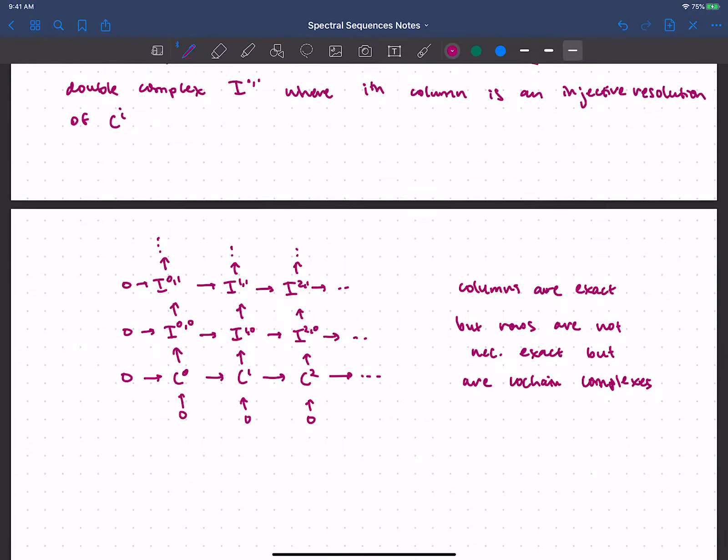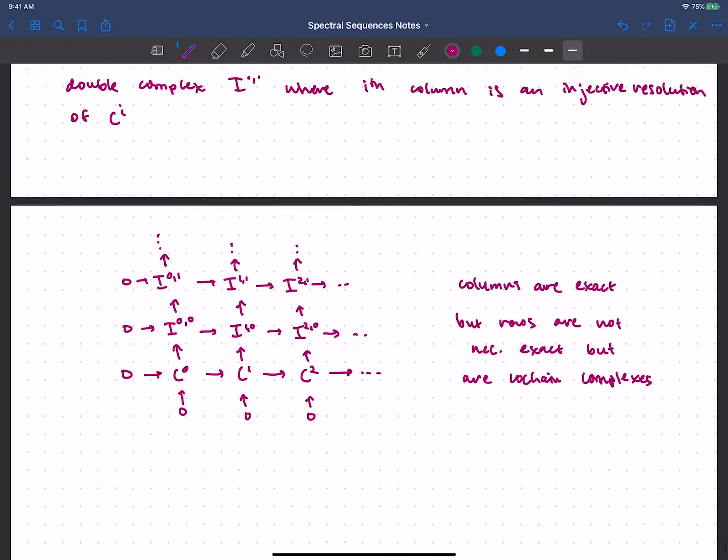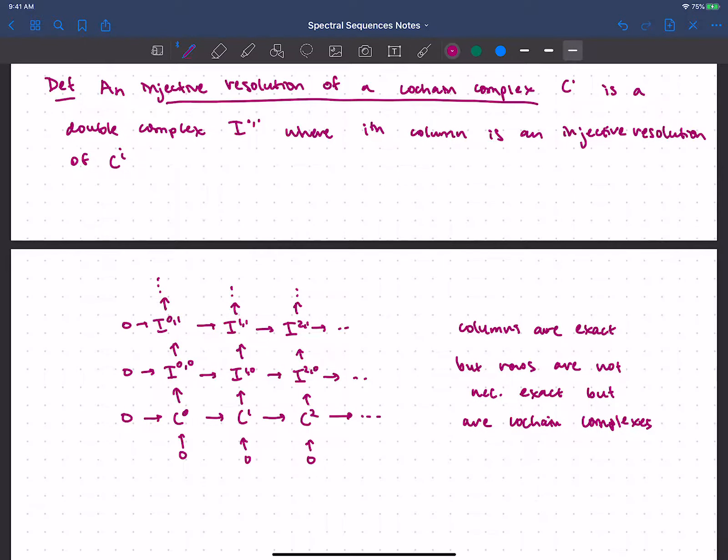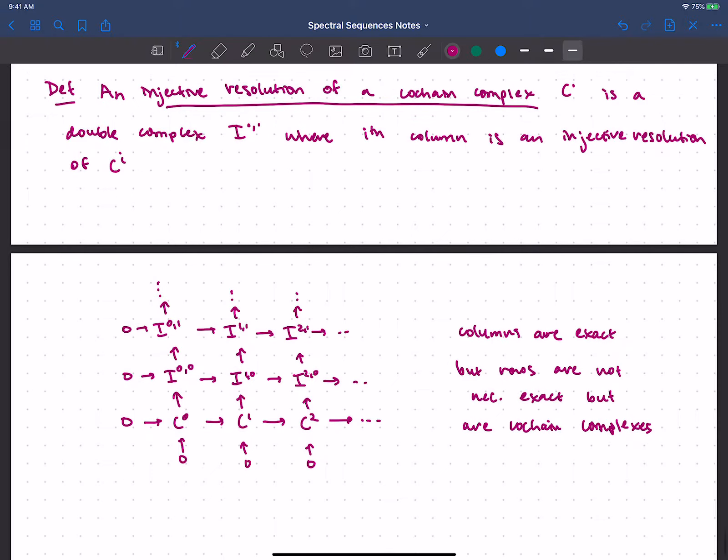Notice the rows are probably not exact. So I'll say not necessarily exact. But they are chain complexes. And that's coming from our definition of a double complex. That when we compose successive differentials, they compose to be zero. And I guess they're cochain complexes because of the way I'm indexing.